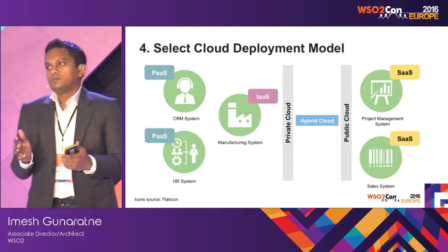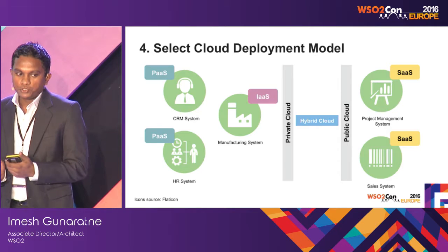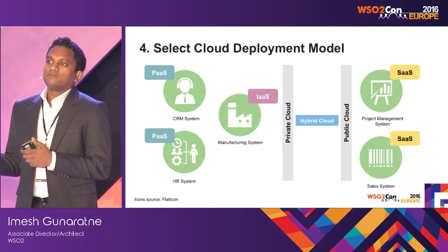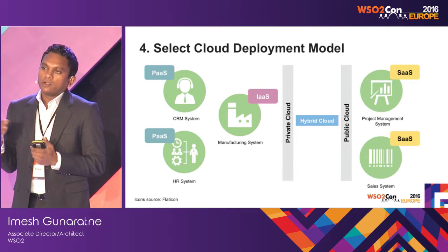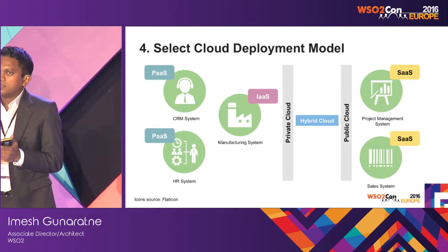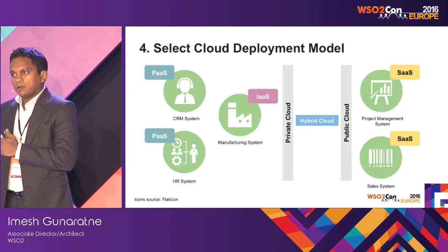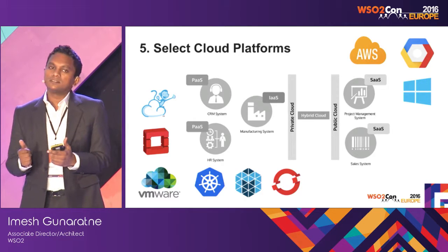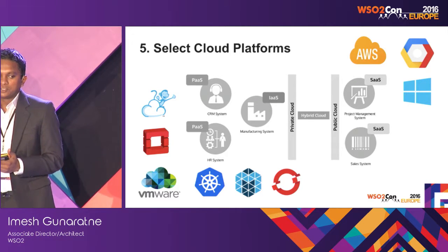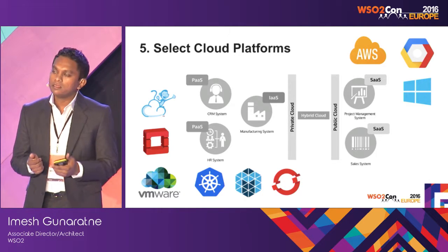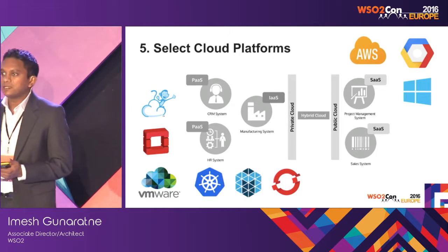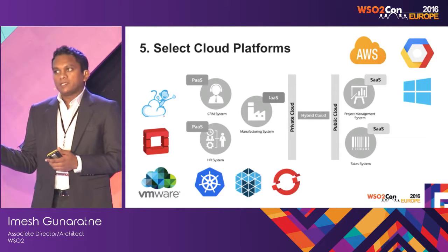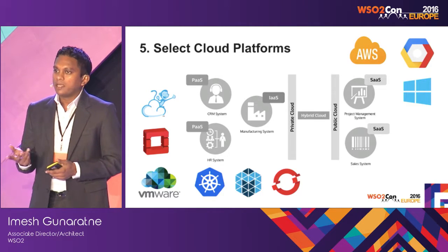Now we know the deployment models we're going to use. Depending on our infrastructure — our on-premise setup and which public cloud vendors we'll use — we need to decide whether to go with a private cloud, public cloud, or a combination of both. For private cloud, infrastructure service solutions include VMware, OpenStack, and CloudStack; for container cluster managers, there are Mesos, Kubernetes, and OpenShift. For public cloud, you can use AWS, Google Cloud, Azure, and many other platforms.